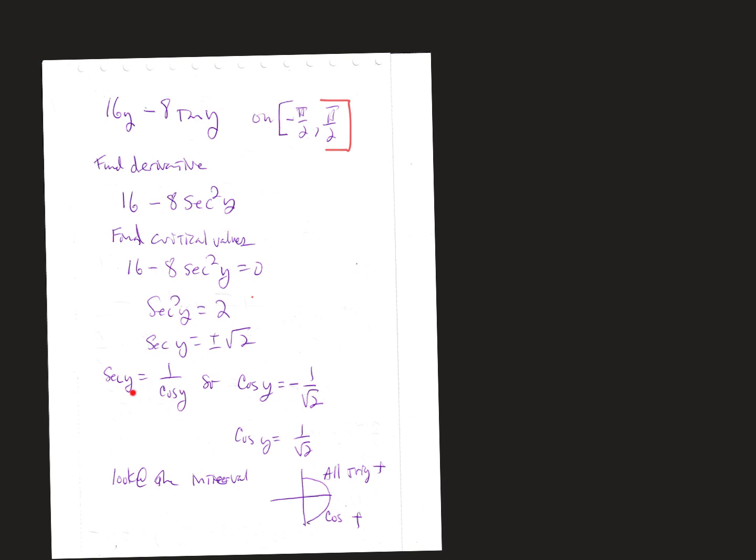Solving secant y is tough. Remember that secant is the reciprocal of the cosine function. So instead of writing secant y, I wrote cosine y and just took the reciprocal of that. There's two possibilities: negative 1/√2 and positive 1/√2, which we could rationalize to ±√2/2.